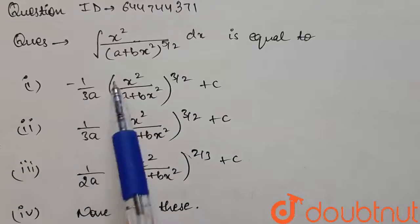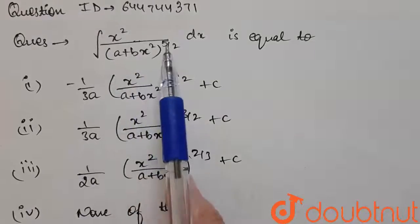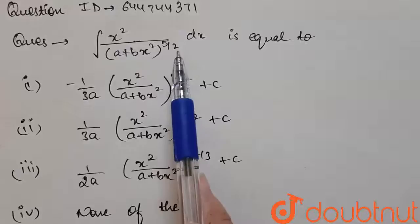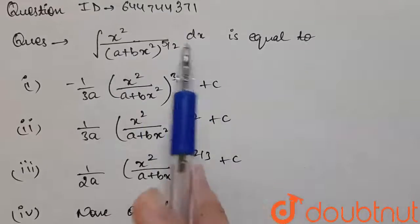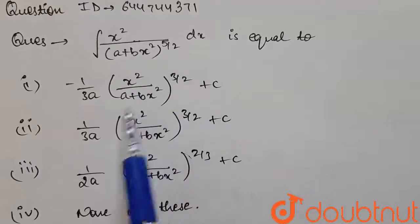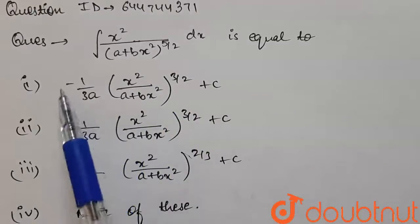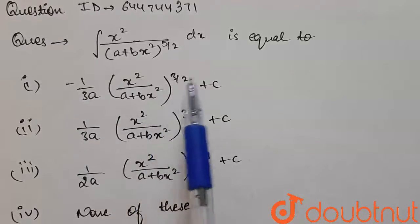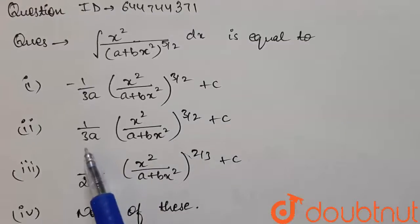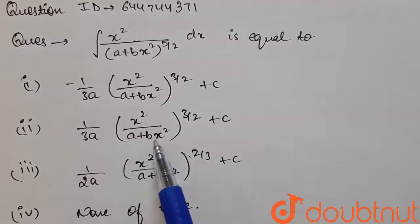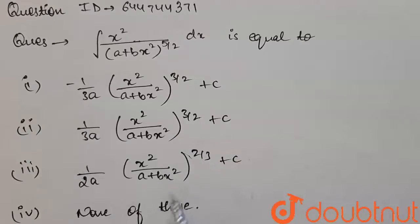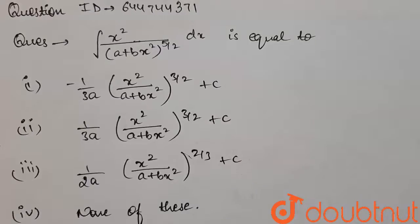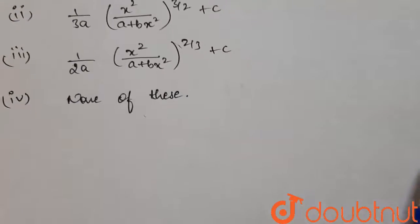...integration of x² by (a + bx²) whole to the power 5/2, dx. We are given with an integral and we have to find its value. The options are: (A) minus 1 by 3a · x²/(a + bx²)^(3/2) + c, (B) 1 by 3a · x²/(a + bx²)^(3/2) + c, (C) 1 by 2a · x²/(a + bx²)^(2/3) + c, and (D) none of these. Now for the solution part...